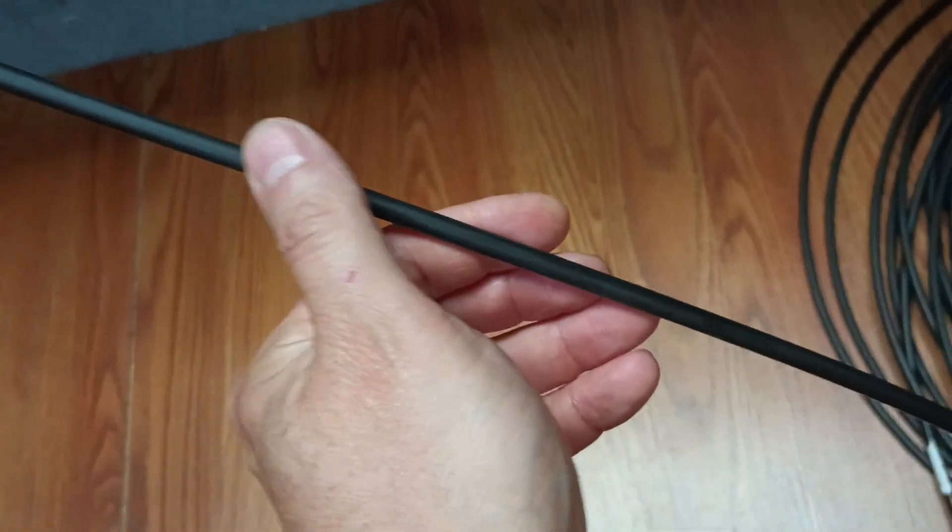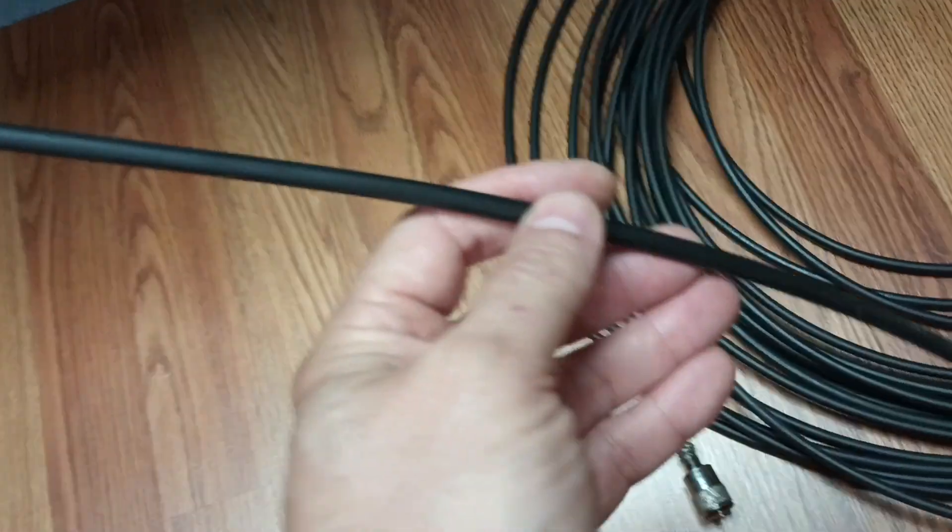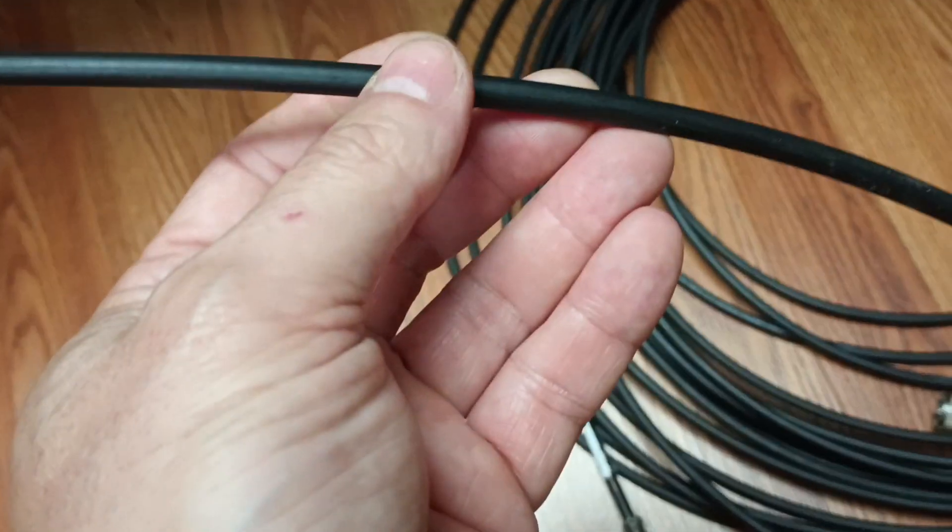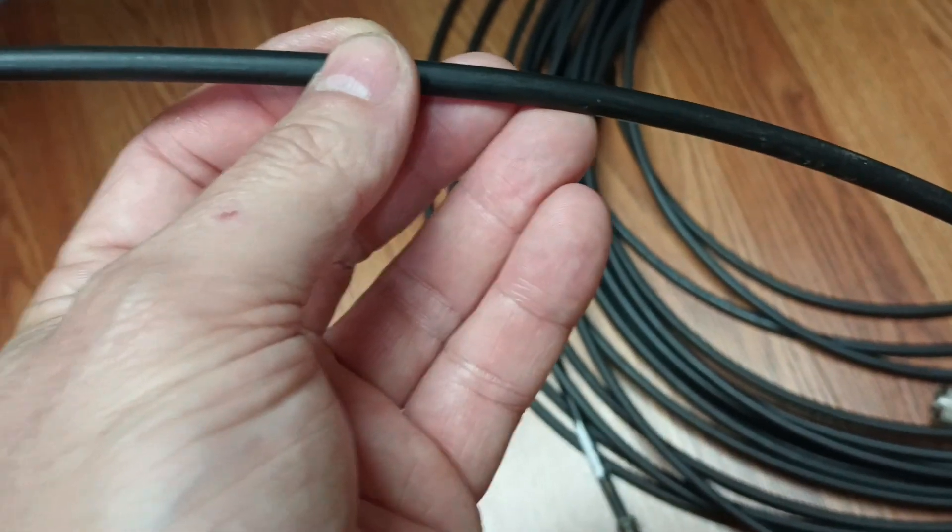Back in the day with twin lead, it was fairly easy because both conductors are exposed. So this would have to be cut in two, that makes a total reflection.